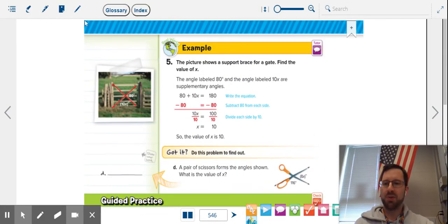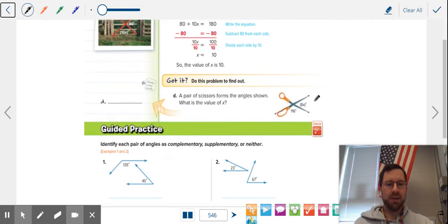Now we're at the top of 546. In this case, we just have two angles that equal 180. So in this case, it's 8X plus 116 equals 180. Same deal. We have addition, we have multiplication, so we're going to undo the addition. We'll take away 116.